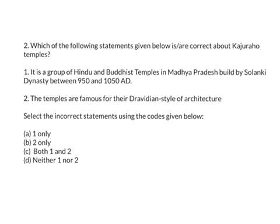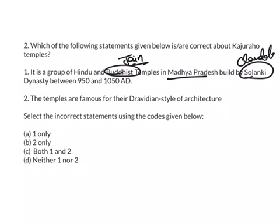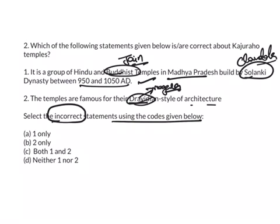The next question is about Khajuraho temples. Statement one says it is a group of Hindu and Buddhist temples in Madhya Pradesh built by the Solanki dynasty between 950 and 1050 AD. Actually, Khajuraho temples are Hindu and Jain temples, not Buddhist, and built by the Chandela dynasty, not Solanki. Statement two says they are famous for Dravidian style of architecture, but the correct style is Nagara. Both statements are wrong, so the answer is C.